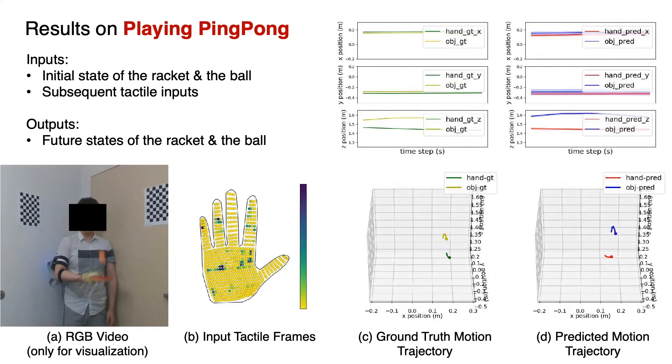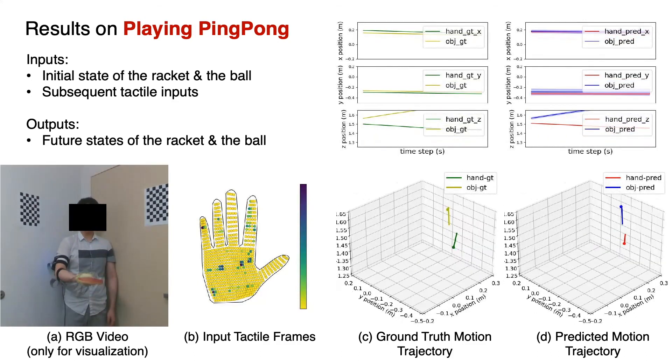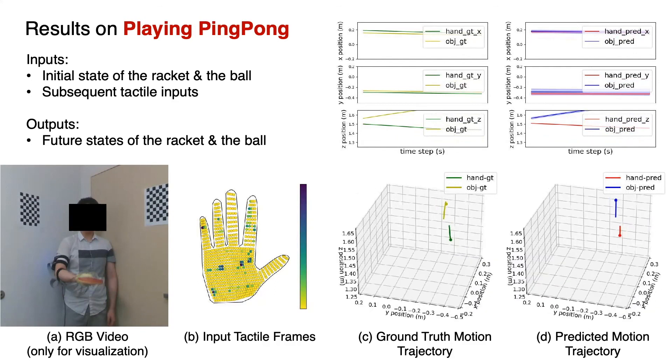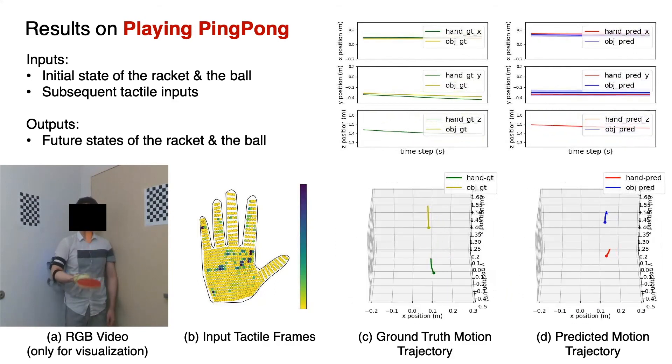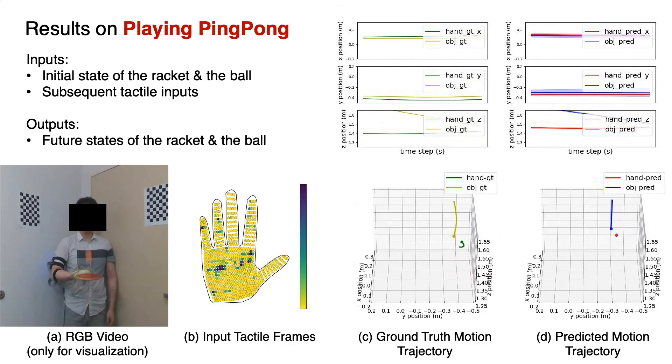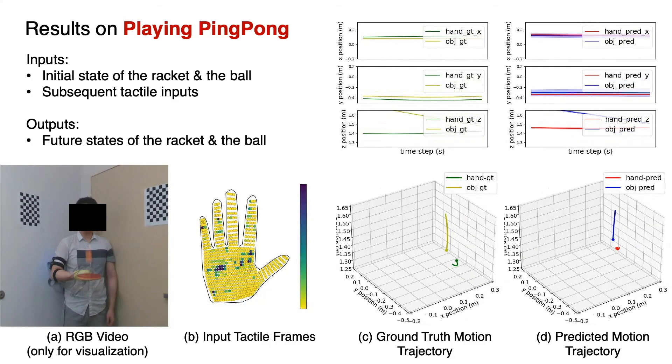The final example is playing ping-pong, where the inputs to our model are the initial state of the racket and the ball, as well as the subsequent tactile inputs. The outputs are the future states of the racket and the ball in 3D space.